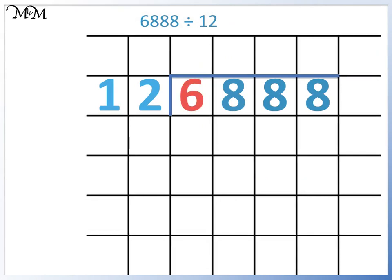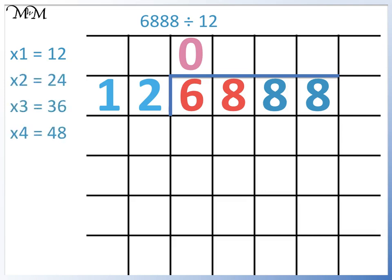12 doesn't divide into 6, so we divide 68 by 12. Listing the numbers in the 12 times table: 12 times 1 is 12, times 2 is 24, times 3 is 36, times 4 is 48, times 5 is 60, times 6 is 72 — and we have now gone past 68. 60 is the closest without going past 68, so 68 divided by 12 equals 5.